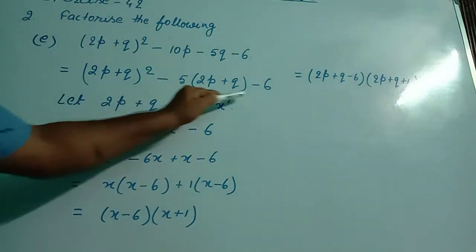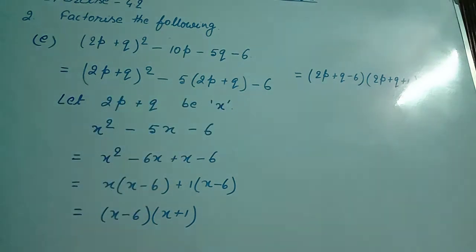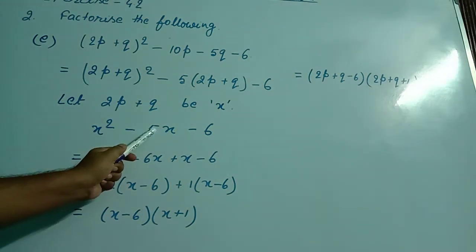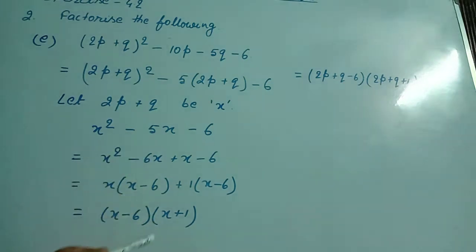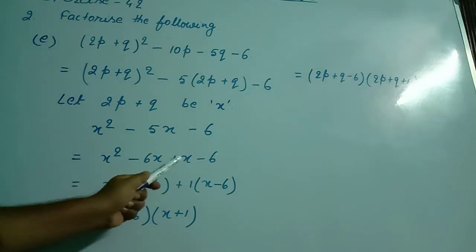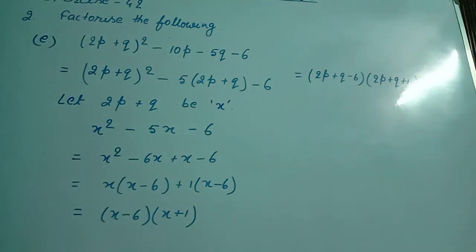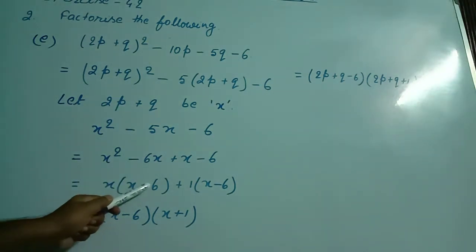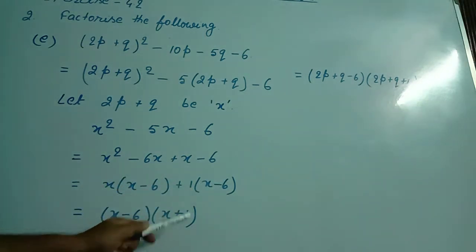Then our equation became x² - 5x - 6. Now, I splitted this as minus 6x plus x, which gives minus 5x, and 6 into 1 equals 6. So the product of coefficients is 6. From the first two terms I took x common, leaving x minus 6. From the last two terms, I took 1 as common, giving x minus 6, resulting in (x - 6)(x + 1).